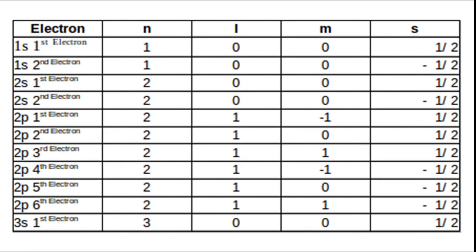For various electrons in shells or subshells, quantum numbers can be determined as follows. For the 1s first electron: n=1, l=0, m=0, s=+½. For the 1s second electron: n=1, l=0, m=0, s=−½. For the 2s first electron: n=2, l=0, m=0, s=+½. For the 2s second electron: n=2, l=0, m=0, s=−½.